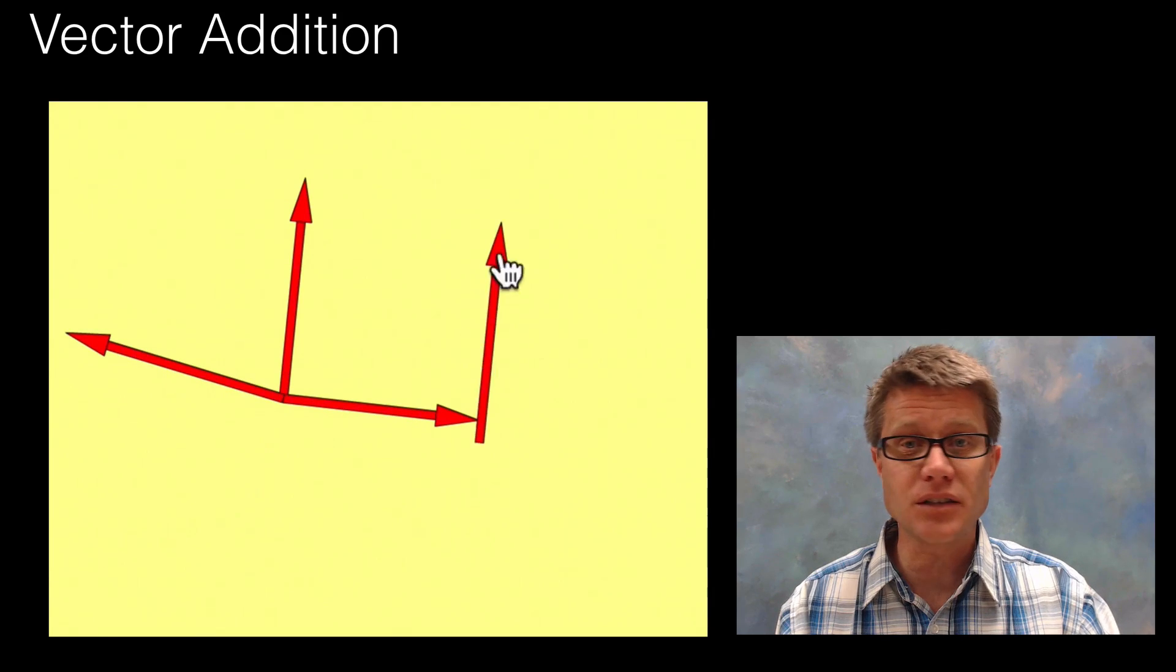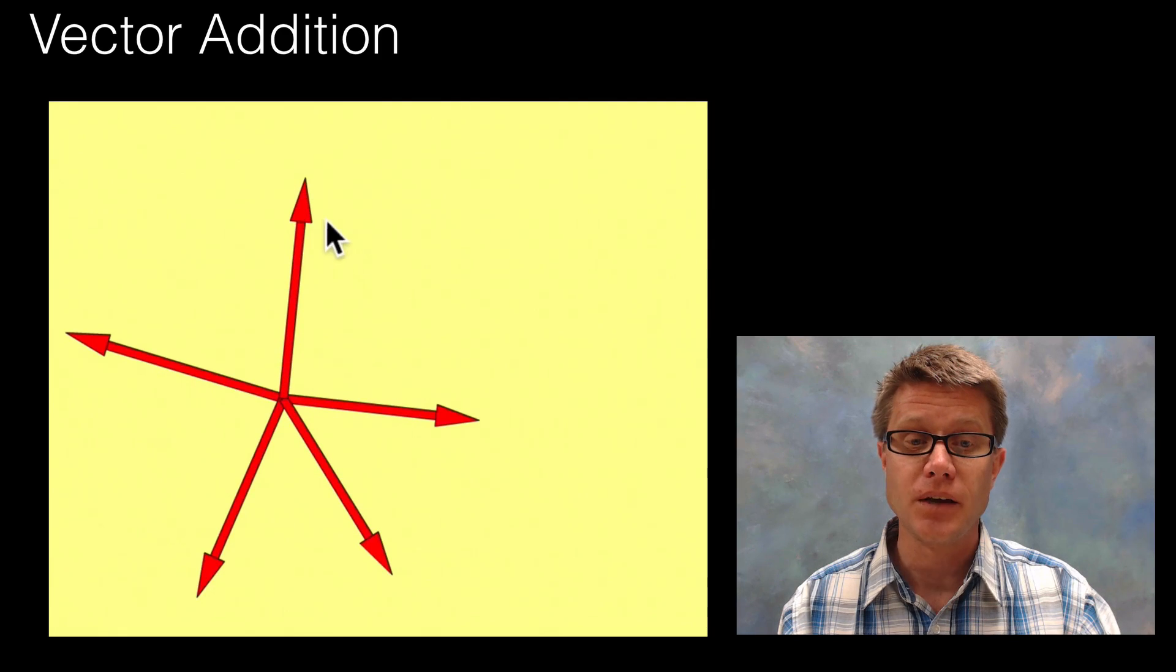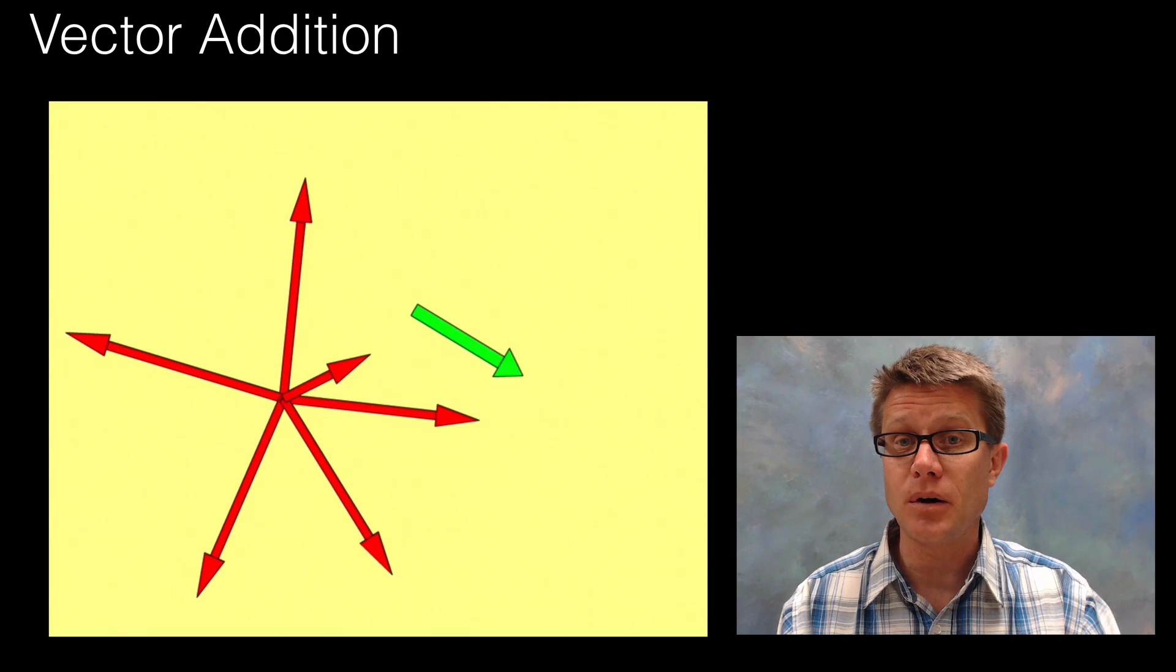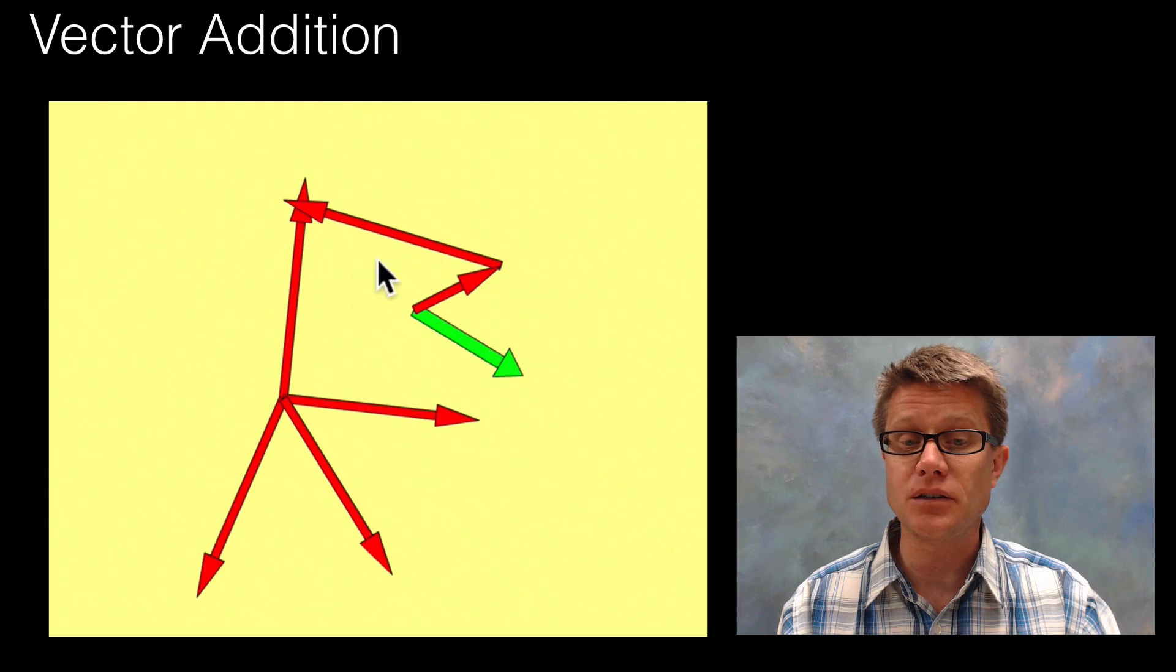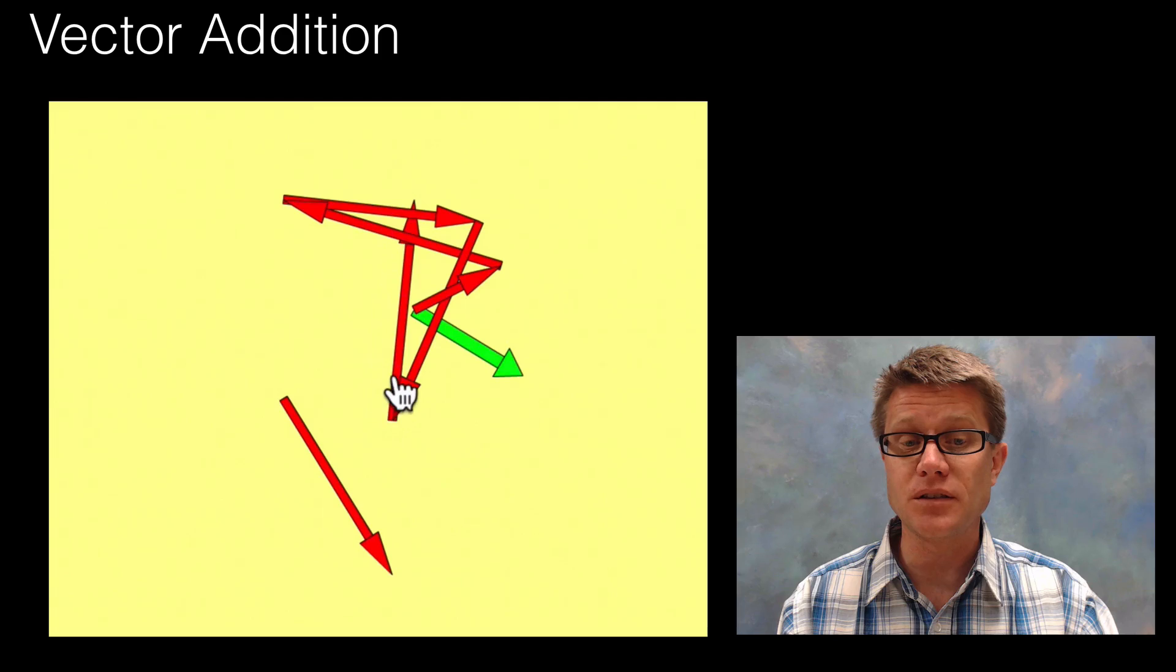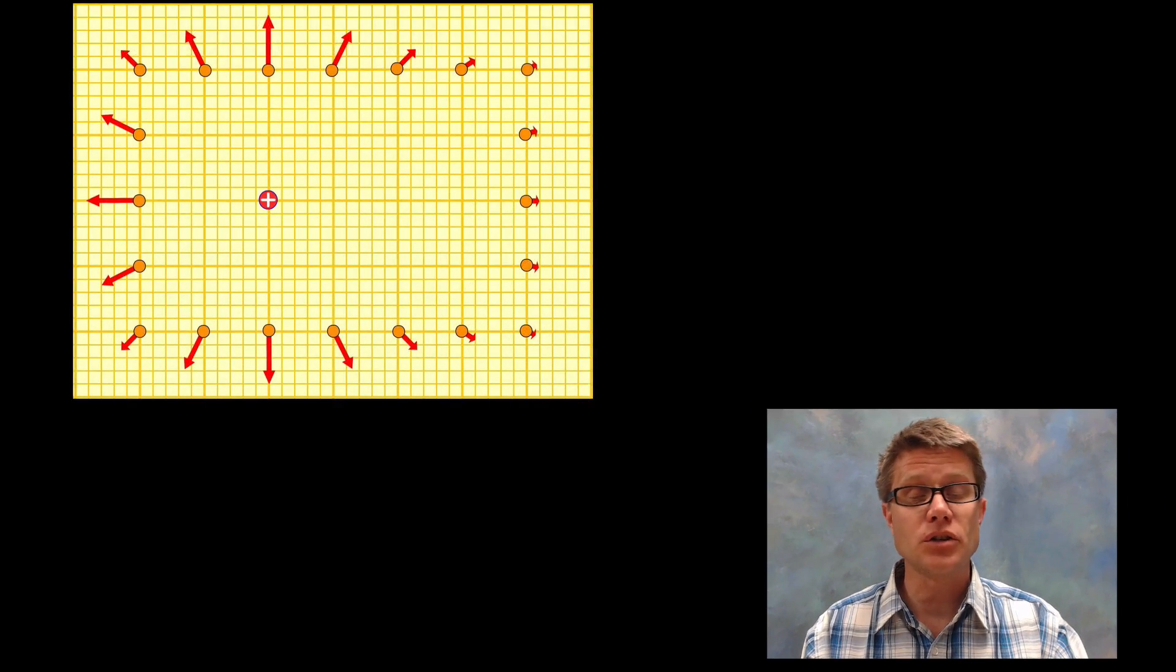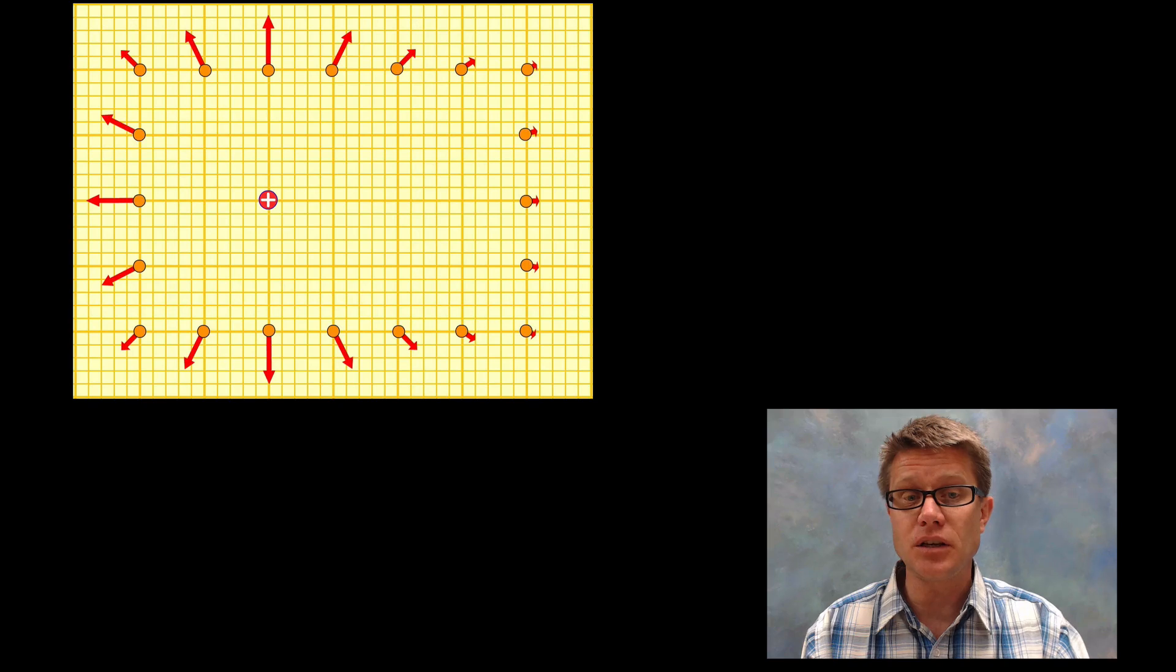And we can get really complex with this. We could have up to six different fields, I mean an infinite number of fields acting on one point. If we want to figure out the sum, all we do is start putting them together tail to tip, tail to tip. By combining all those vectors we can figure out what is the sum and we get right to the tip of that green point. And so to show you this we're going to use a PhET simulation.